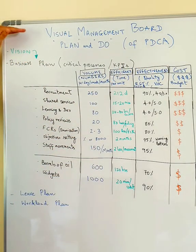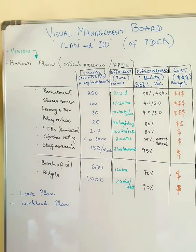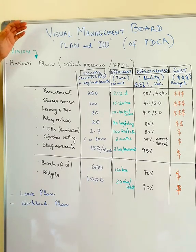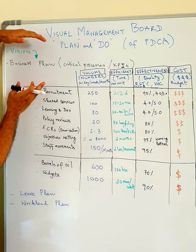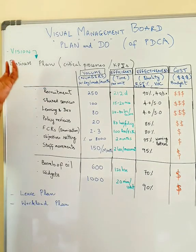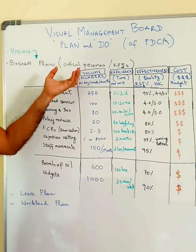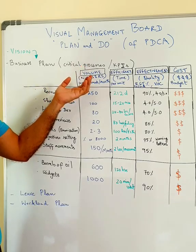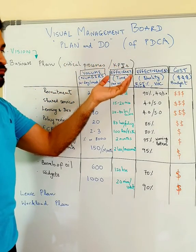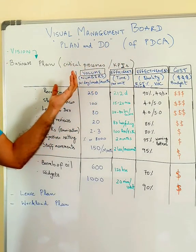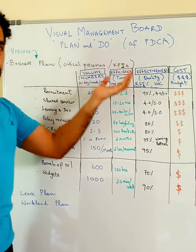As we know, it all begins with the vision of the company. From the vision and objectives of the organization, we convert it into a business plan. From the business plan we look at critical processes and then develop some critical KPIs for measuring the success of those critical processes.